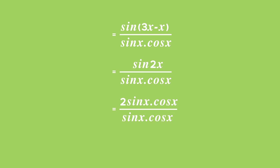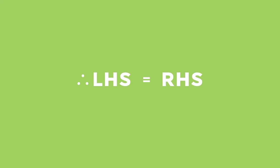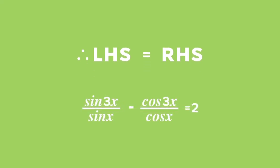There are common factors in the fraction, which we can cancel, and we'll be left with just 2 on the left-hand side. So, the left-hand side is equal to the right-hand side. Hence, we have proved that sin 3x over sin x minus cos 3x over cos x is equal to 2.